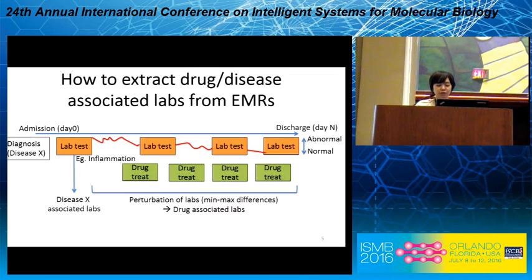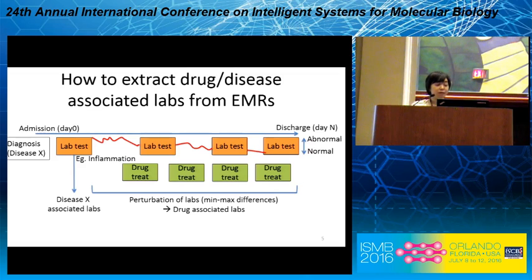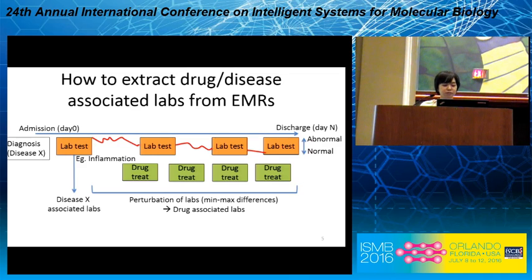For the drug-associated lab, I used the entire lab perturbation during drug treatment. For example, there is a lab for measuring inflammation in the blood. By treatment with an anti-inflammation drug, that lab will go down to normal level. I use the change level of the lab as a drug-associated clinical signature.